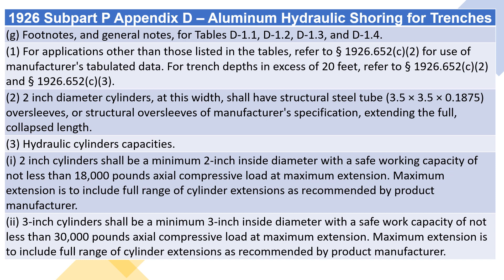2-inch diameter cylinders, at this width, shall have structural steel tube 3.5 x 3.5 x 0.1875 oversleeves, or structural oversleeves of manufacturer's specification, extending the full collapsed length. 3. Hydraulic cylinder capacities: 2-inch cylinders shall be a minimum 2-inch inside diameter with a safe working capacity of not less than 18,000 lb axial compressive load at maximum extension. Maximum extension is to include full range of cylinder extensions as recommended by the product manufacturer.